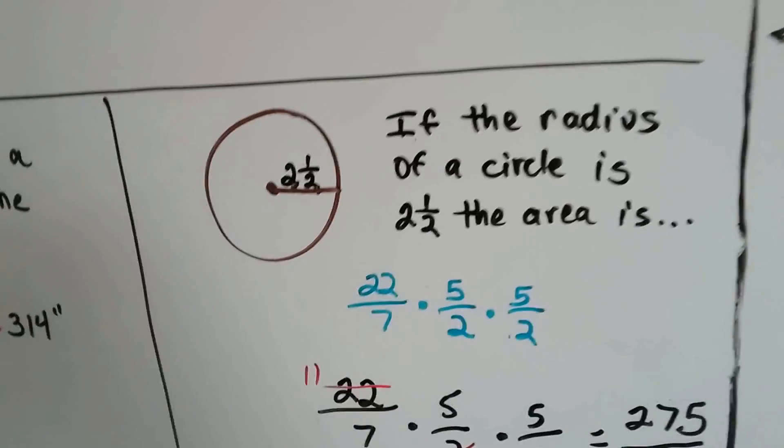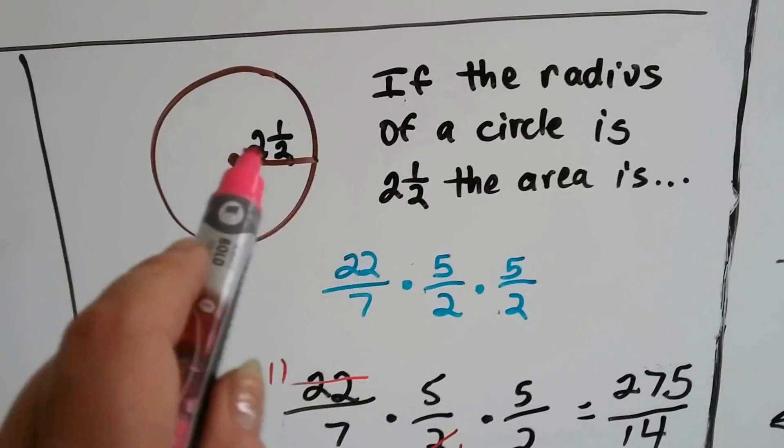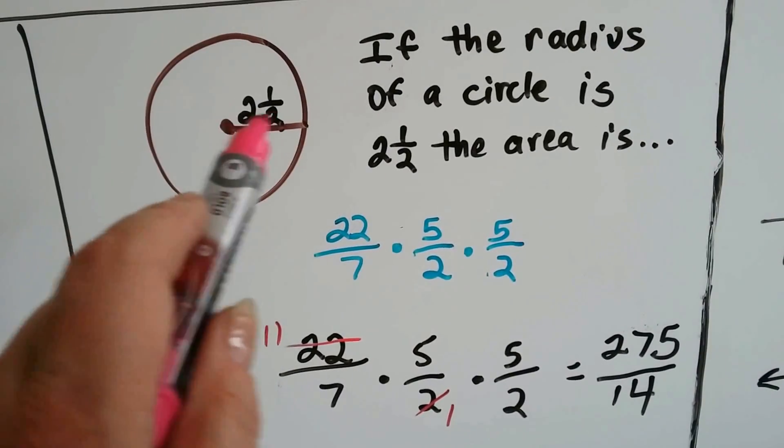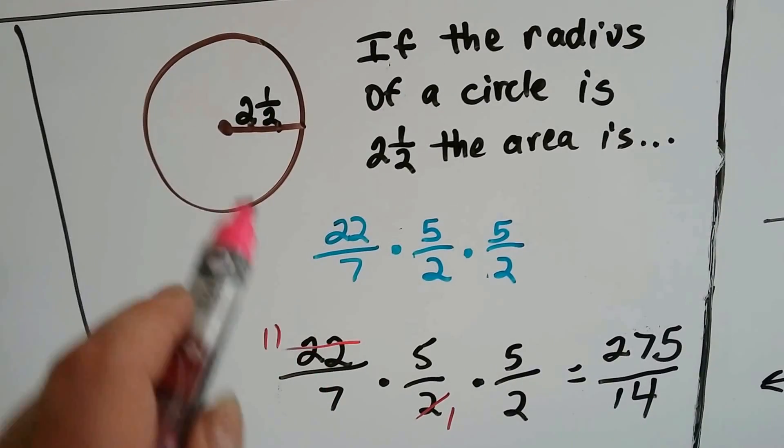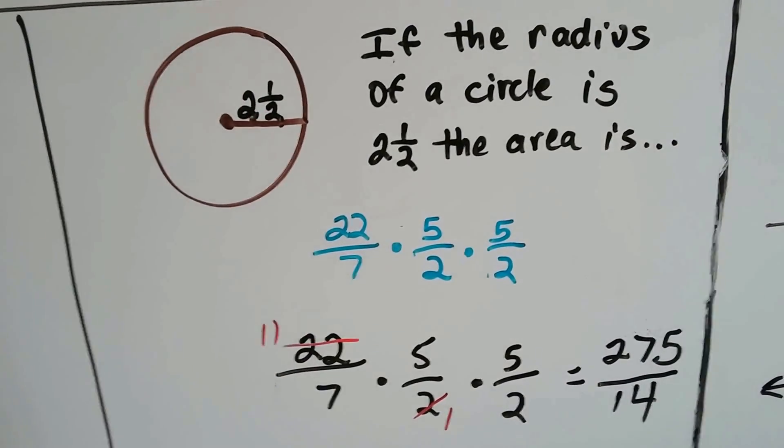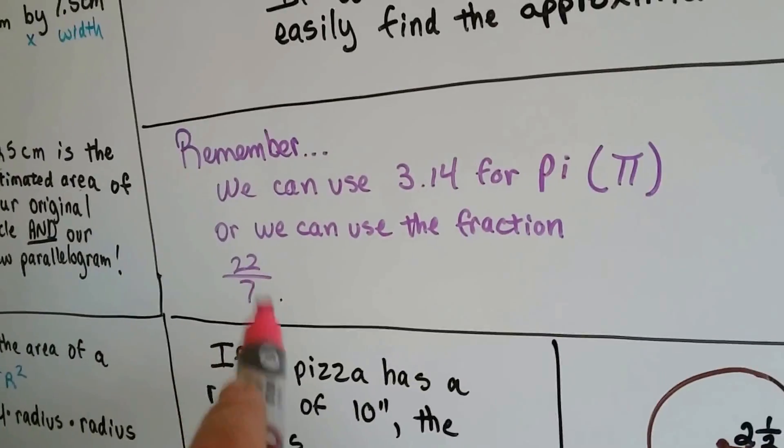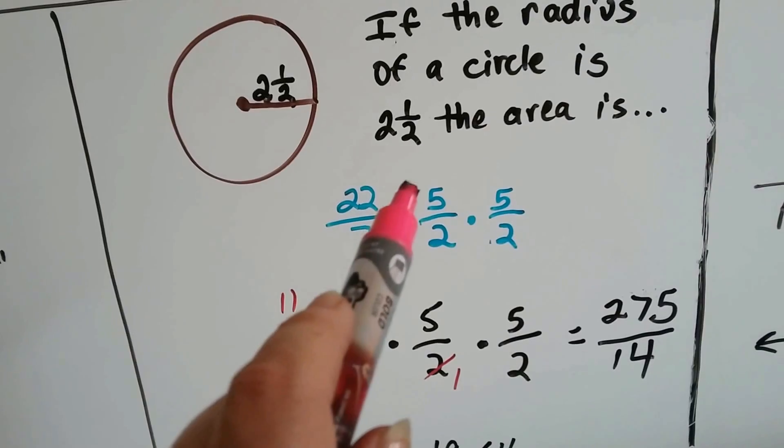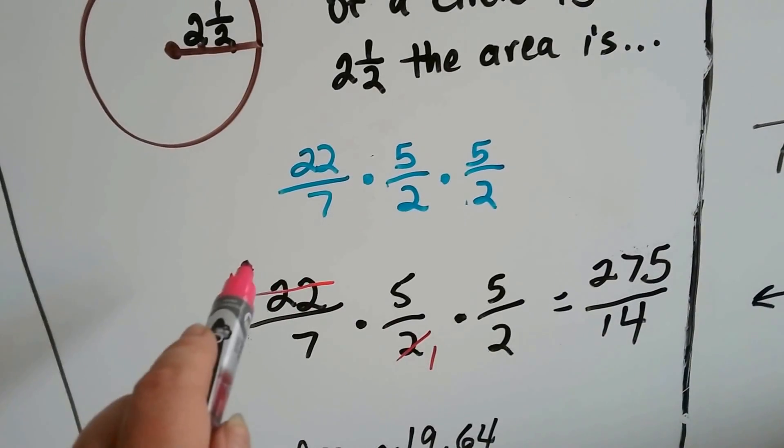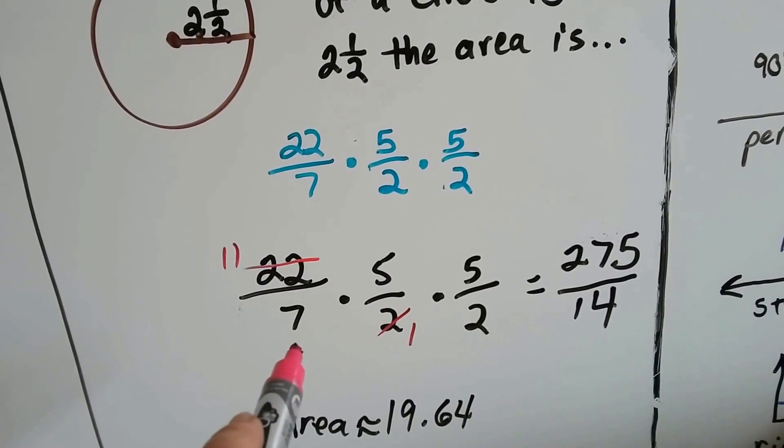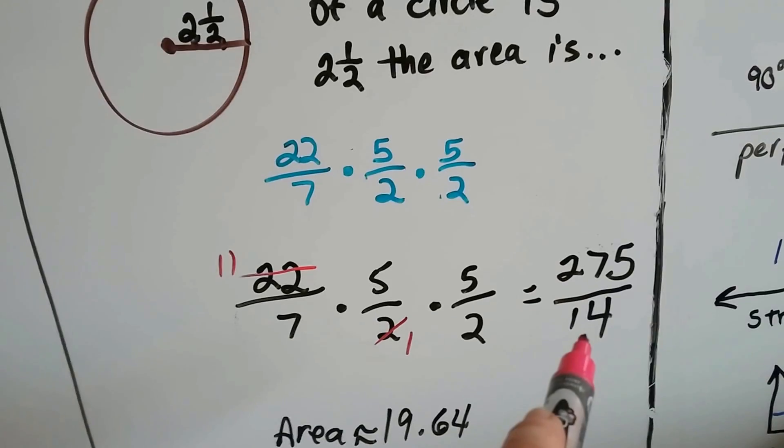If the radius of the circle is measured at two and a half, and it could be centimeters, feet, inches, miles, but if it's measured at two and a half, then the area is, we turn this into an improper fraction, 2 times 2 is 4 plus 1 is 5. 5 over 2 is this as an improper fraction. Remember, we multiply the whole number by the denominator and add the numerator over the original denominator. So now we've got 22 over 7, because we can use that for pi, multiplied by 5 over 2 times 5 over 2. This 2 and the 22 cancel each other out as 1 and 11, and we get 11 times 5 times 5 and 7 times 1 times 2.